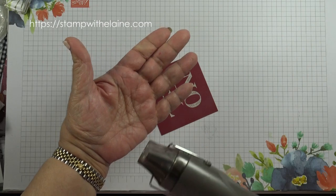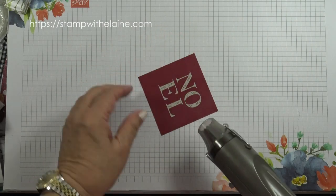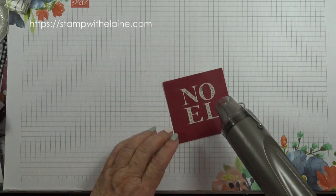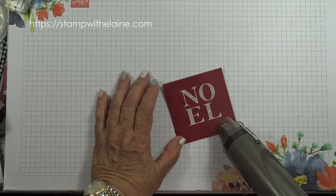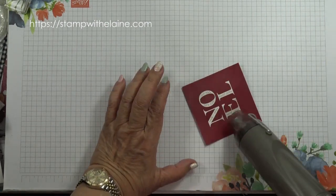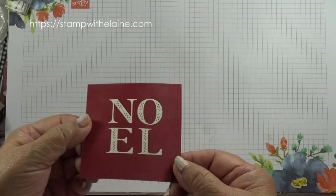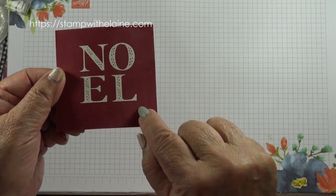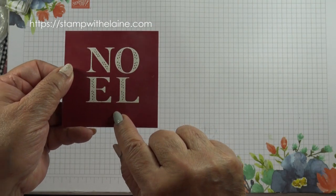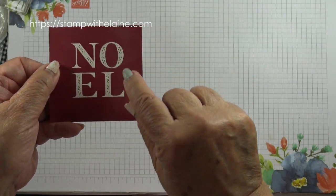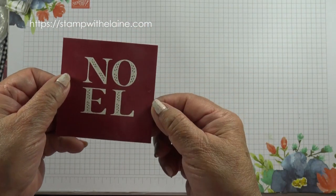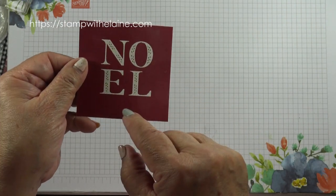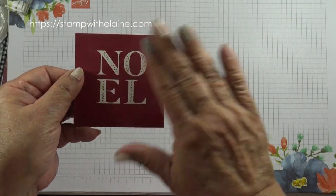Bring in the heat tool and heat set it. When you heat setting the embossing powder, as soon as it puffs up like that, then move the heat tool to the next section. Don't overheat it because if it does, it will go dull.